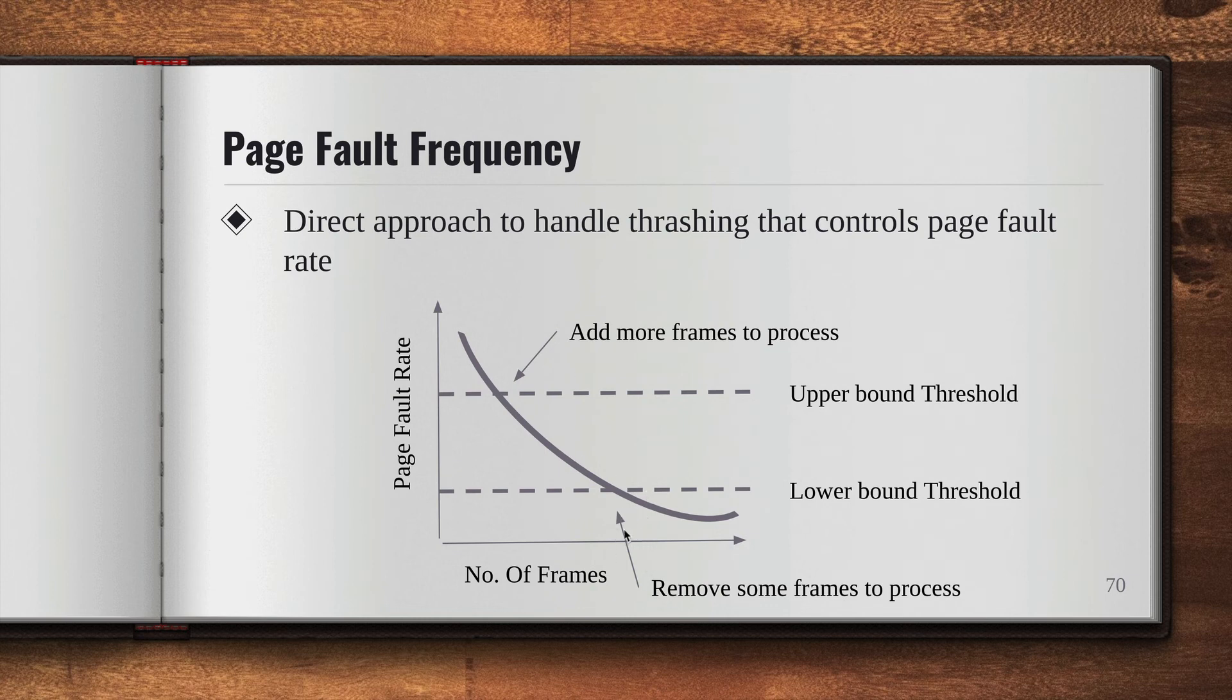If the page fault rate is below this threshold, then we don't need that many frames in memory and we can remove some of them. That's how thrashing is managed.